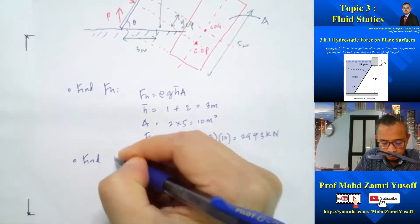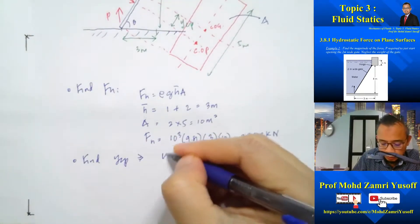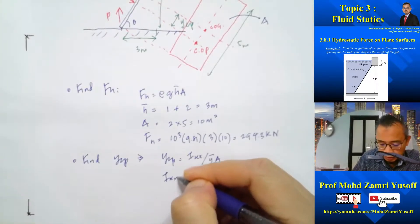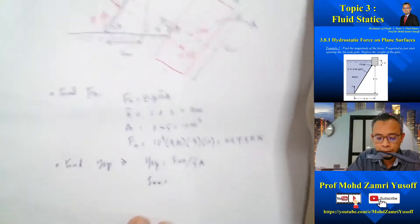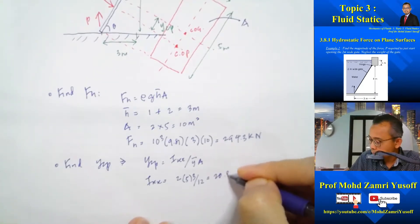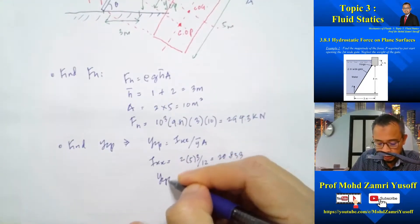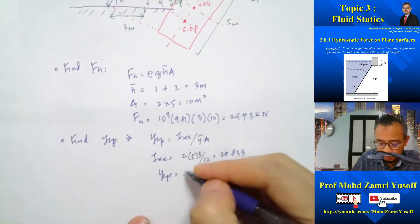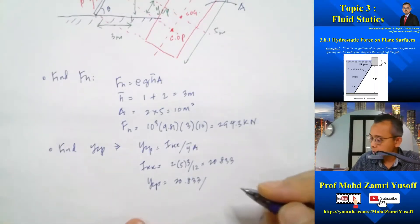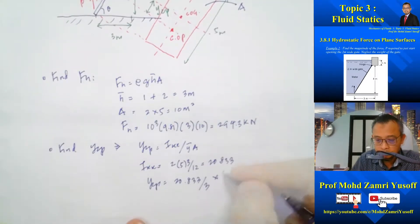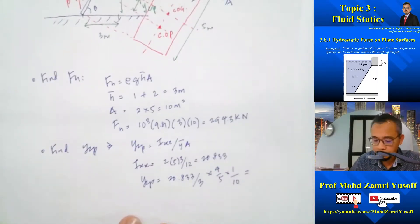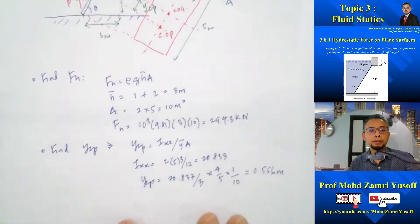Next we find Y_CP. The formula is Y_CP = I_XX / (Y-bar × A). For a rectangle, I_XX = BD³/12 = 2 × 5³ / 12 = 20.833 m⁴. Y-bar equals H-bar divided by sine theta, so 3 divided by (4/5) equals 3.75 meters. Therefore Y_CP = 20.833 / (3.75 × 10), which gives Y_CP = 0.556 meters.